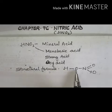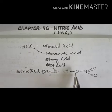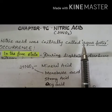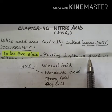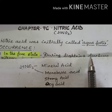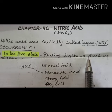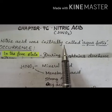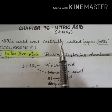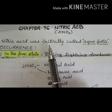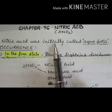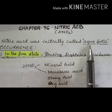This is the structural formula of nitric acid. Nitric acid was initially called aquifortis by the alchemists because aquifortis means strong water — it is corrosive in action on many metals. It reacts with many metals, and that's why earlier the alchemists called it aquifortis.